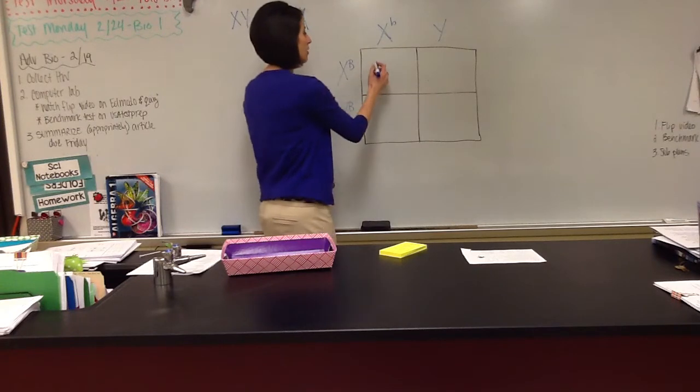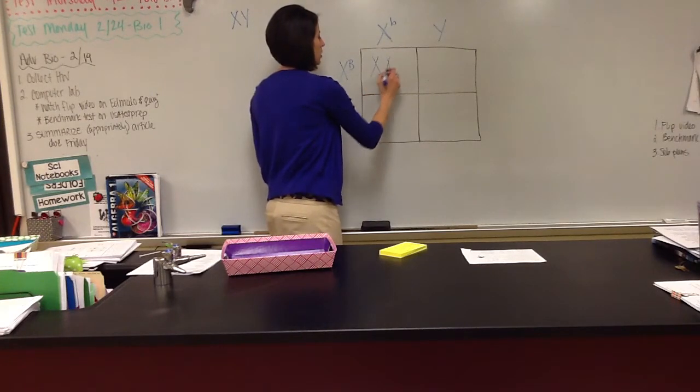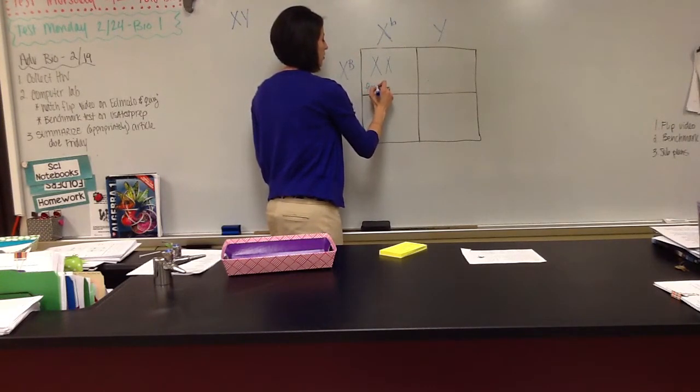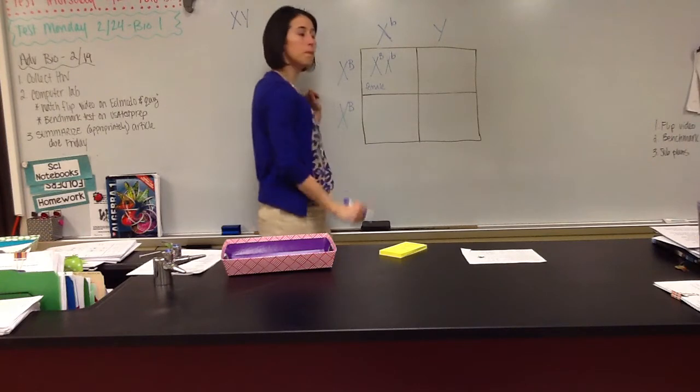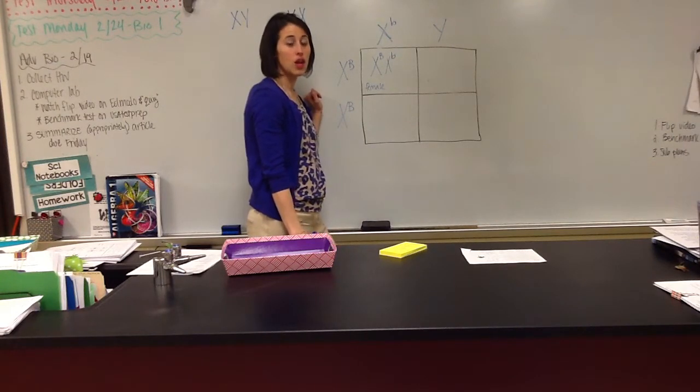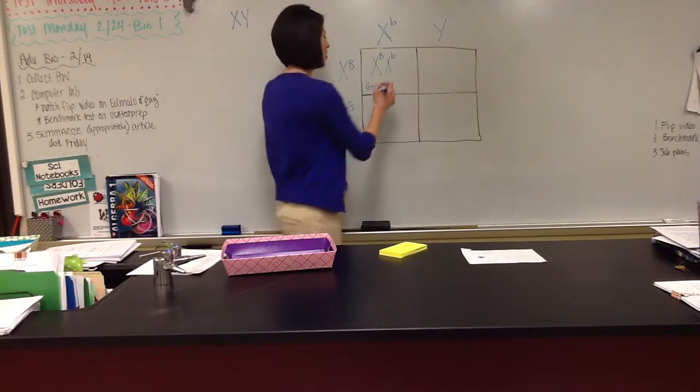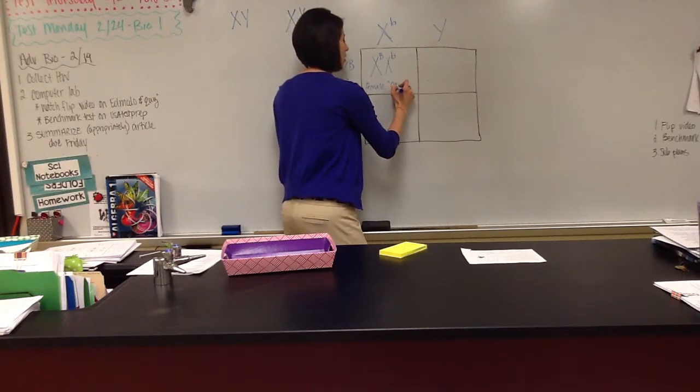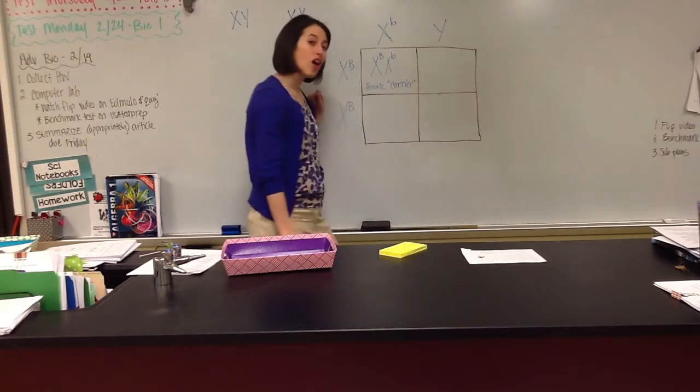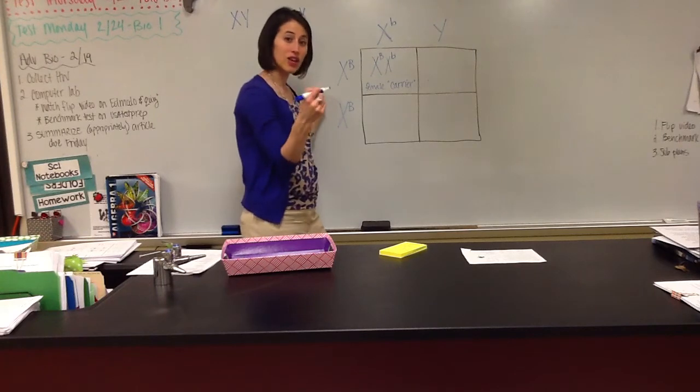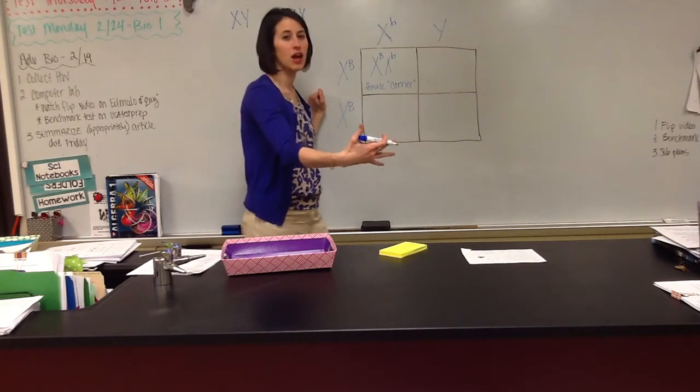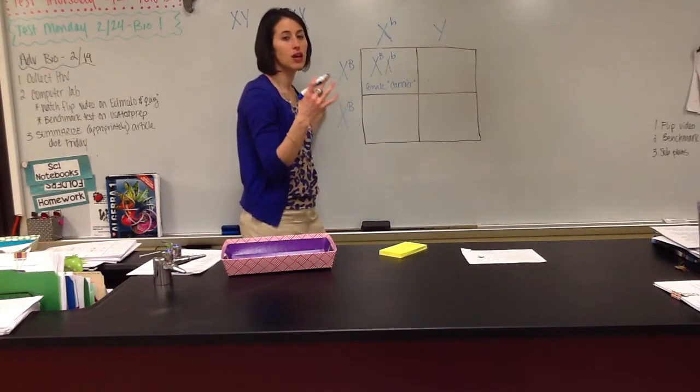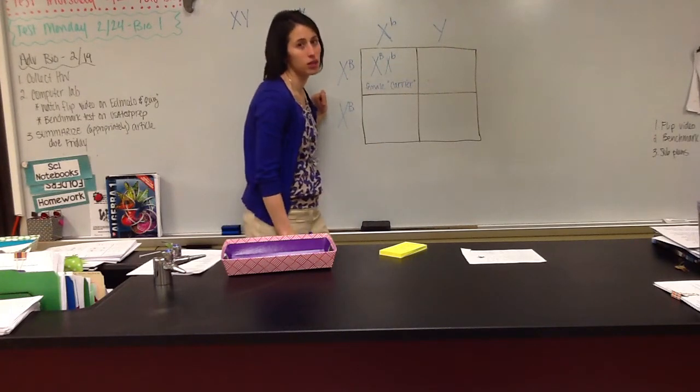This one is going to be XX, so she's going to be a female, and she's going to inherit both a big B and a little B. So that means she's a carrier. So she's a female carrier, and all that means is that she's carrying that gene even though she doesn't show it. So she has a chance of passing that on to her offspring, but this female is not colorblind.